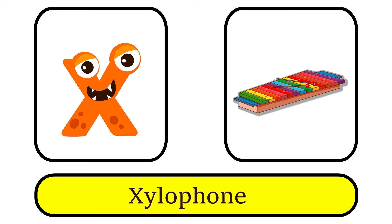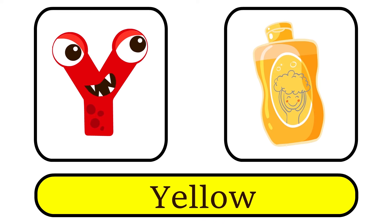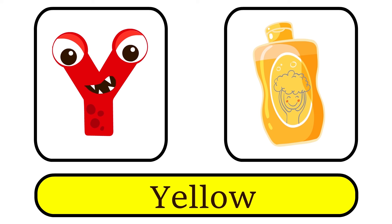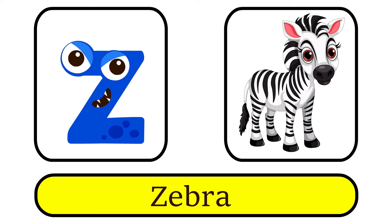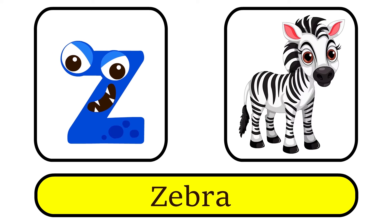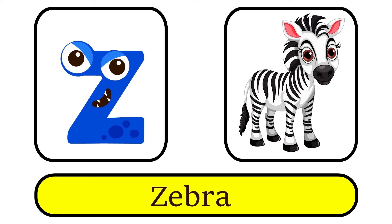X is for Xylophone. X, X. Y is for Yellow. Y, Y. Z is for Zebra. Z, Z. Zebra.